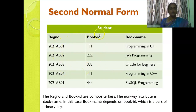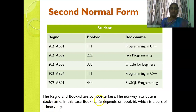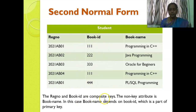This table is not in second normal form. The student table has register number, book ID, and book name. Register number and book ID form a composite key, meaning both are primary keys together. The non-key attribute is book name. In this case, book name depends on book ID, which is only a part of the primary key, so it is not under second normal form.